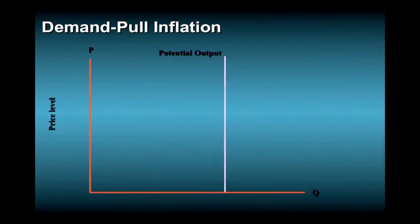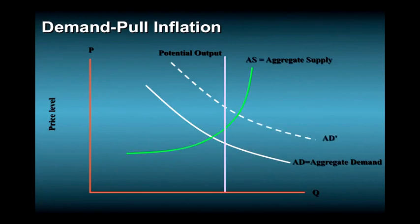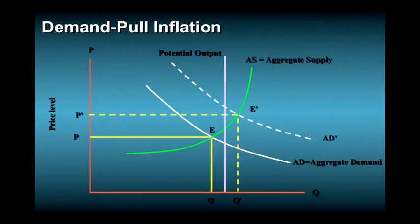During wartime, increased defense spending moves aggregate demand from AD to AD', and equilibrium output increases from E to E' as real GDP expands. However, when real output rises far above potential output, the price level moves up sharply as well, from P to P'.